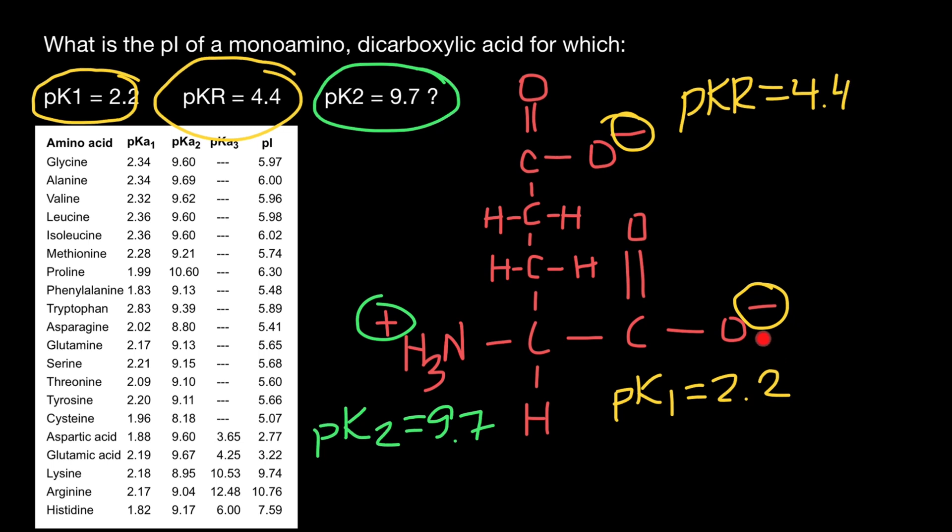Now let me explain why I'm using yellow color to designate these two groups and green color to designate this group. These two groups are the same. Carboxylic acid groups have the same properties, and as you see, pKa1 is very close to each other: 4.4 here and 2.2 here, which is very different from pKa2, which is 9.7 here.